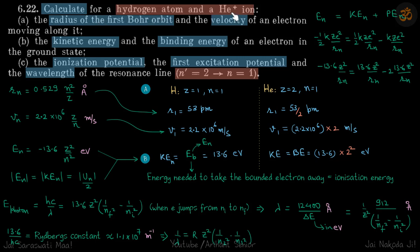For hydrogen and helium atoms, we need to find the radius of the first Bohr orbit, the velocity of the electron, kinetic energy, binding energy of the electrons in the ground state, ionization potential, first excitation potential, and the wavelength of the resonance line when the electron jumps from the second orbit to the first orbit. This is a very fundamental question where we are going to use a lot of fundamental equations, so let's write all the equations first.